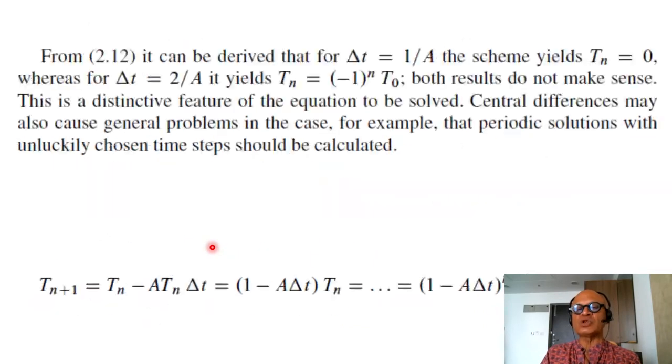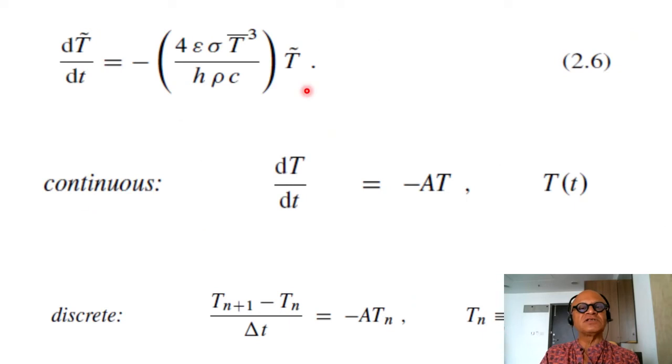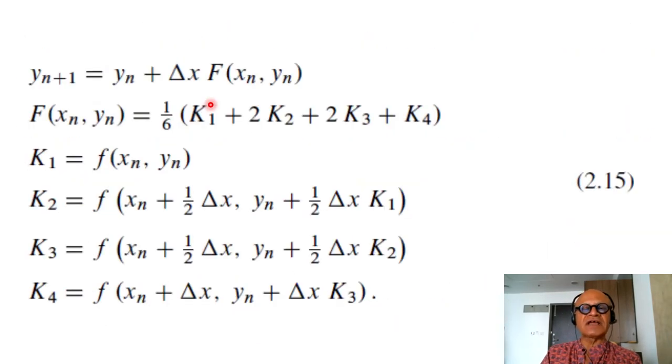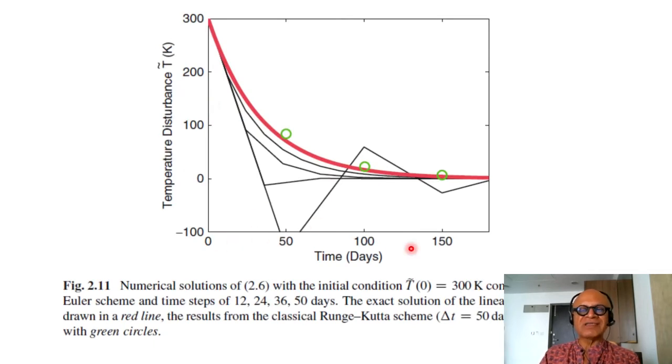So if we look now for the solution of 2.6 which is this equation. So remember we could solve this analytically but we are using this as a paradigm for explaining discretization and finding solutions. So solving that equation numerically here is time in days and temperature distribution t tilde now t tilde starting at time 0. So the analytical solution is shown in the red line. So the exact solution of the linearized system is drawn here in the red line so that you can compare numerical solutions